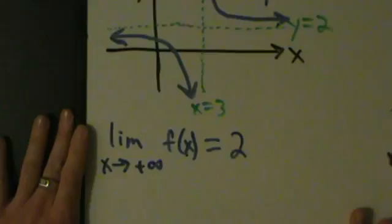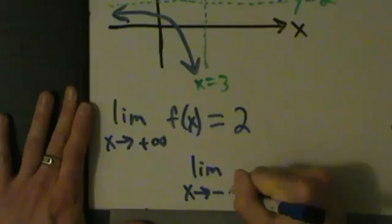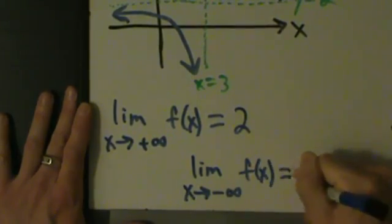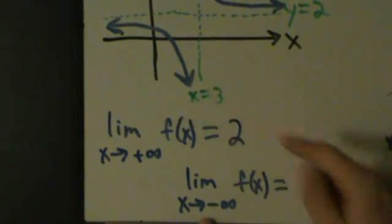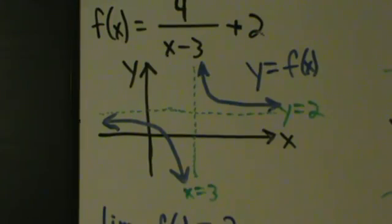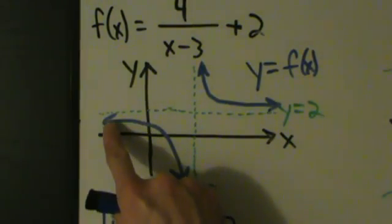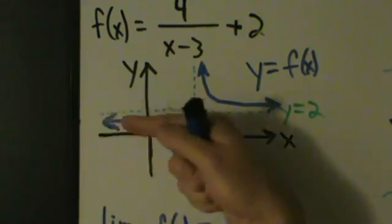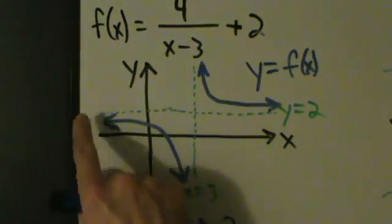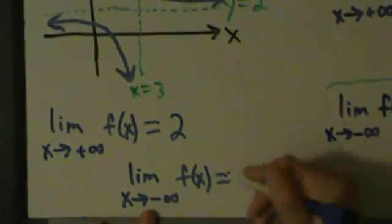What if we send x to negative infinity? So the limit as x approaches negative infinity of f of x equals what? Now x approaches negative infinity, so we take x and send it really far off to the left. If we follow along the blue curve, the values of y are getting closer to 2 — they're on the other side, but that doesn't actually matter. As x goes off to negative infinity, the values of y are getting closer and closer to the horizontal asymptote, which is y equals 2. So this limit is also 2.